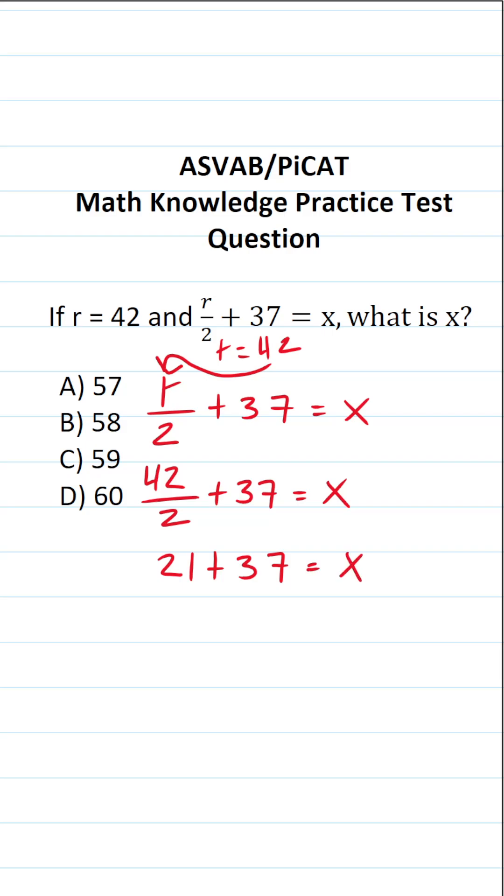If you couldn't do 42 divided by 2 mentally, you could always do long division. 2 goes into 4, 2 times without going over. 2 times 2 is 4. 4 minus 4 is 0. Drop down this 2. 2 times 1 is exactly 2 with no remainder. So we're done with that.